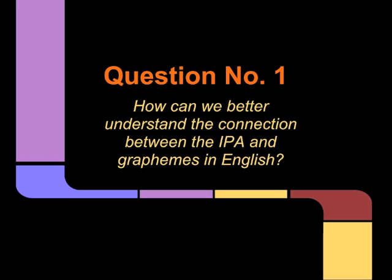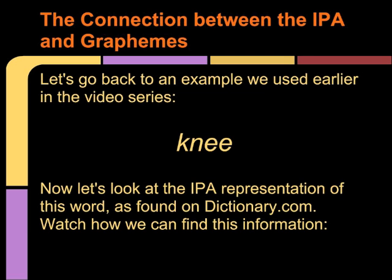Question number one: How can we understand this connection? Let's go back to an example we used earlier in the video series. Let's look at the IPA representation of the word 'knee' as found on dictionary.com. Watch how we can find this information.